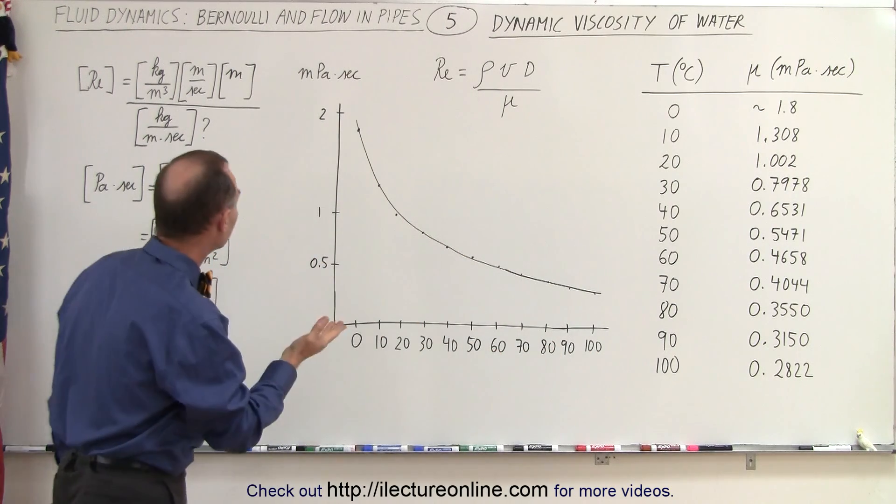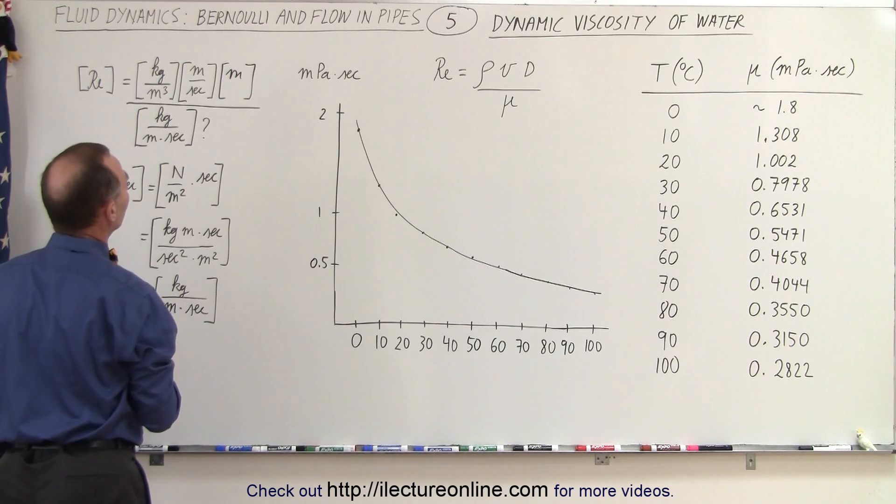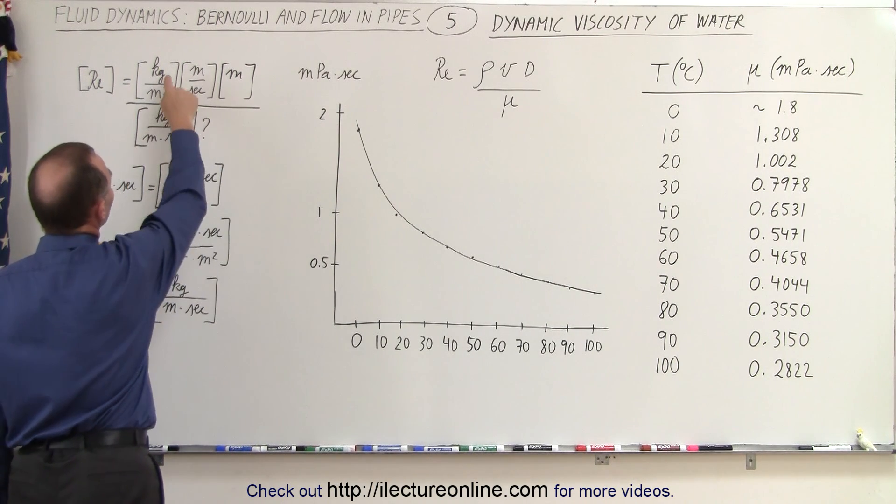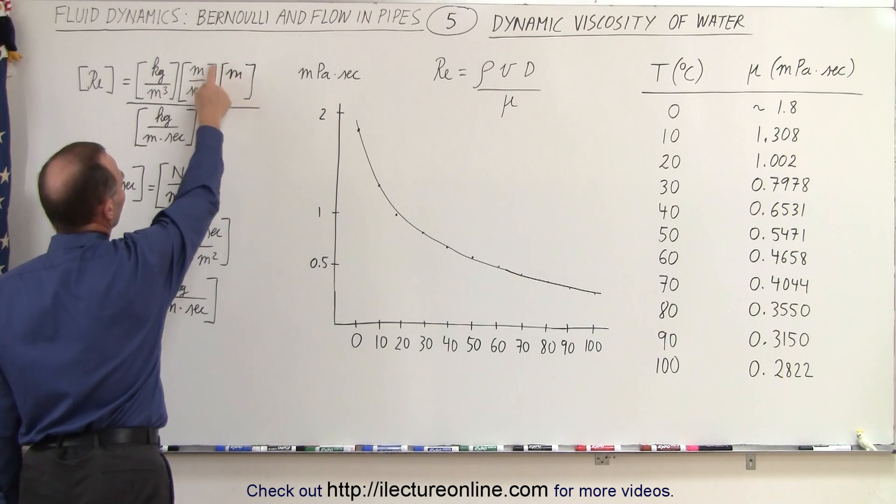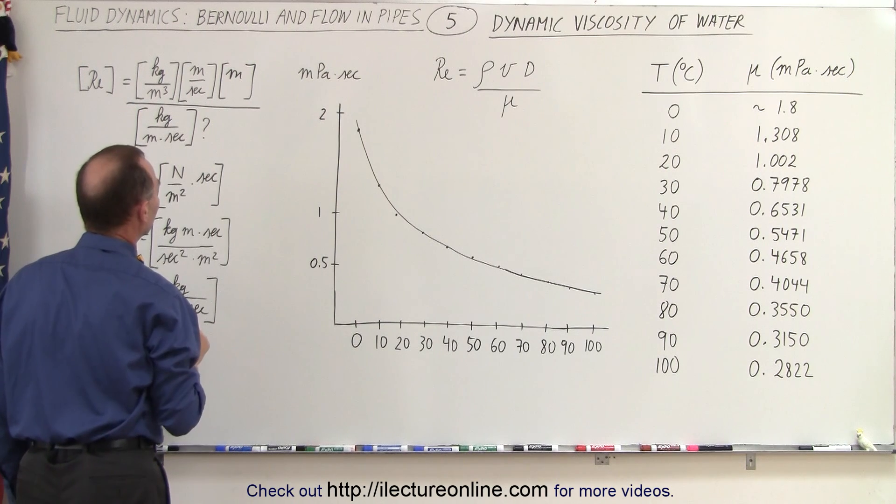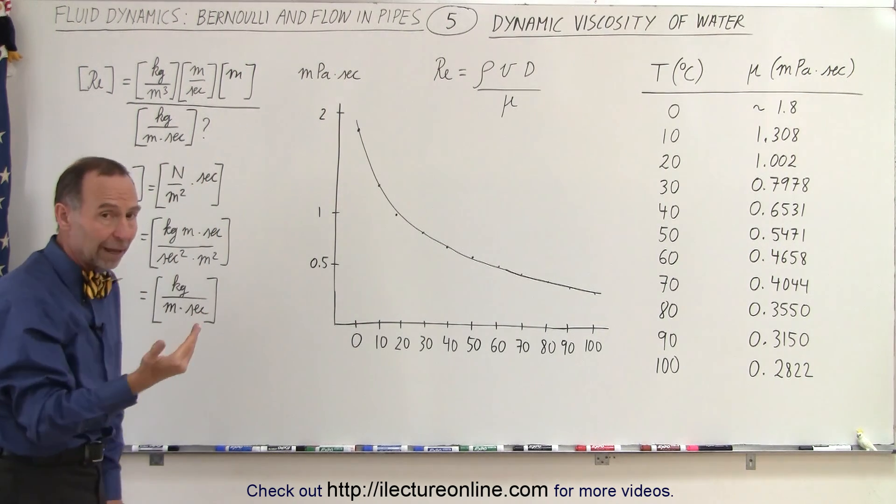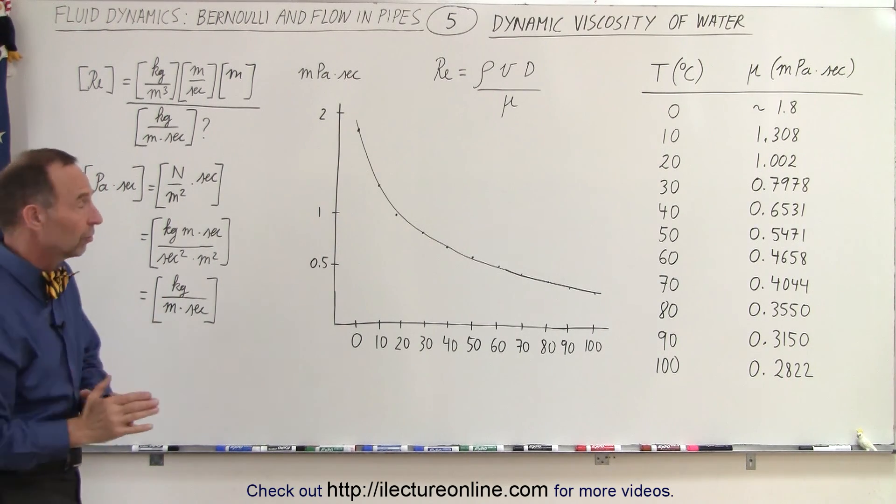Now what about the units? Notice if we calculate the Reynolds number, we're trying to find the units of the Reynolds number. In the numerator, it's density times velocity times distance. If we simplify that, we get kilograms per meter times seconds. So the denominator should be kilograms per meter times seconds for the two to cancel out and for the Reynolds number to be unitless.